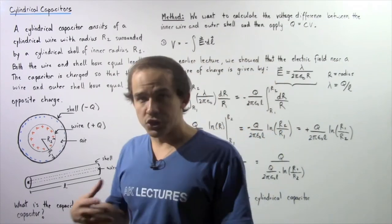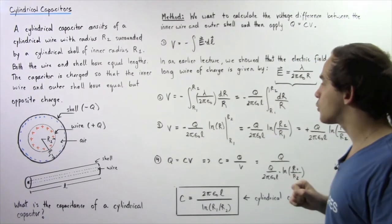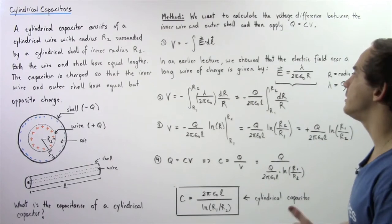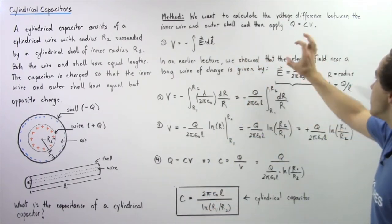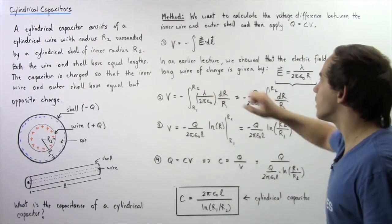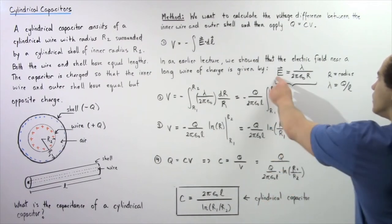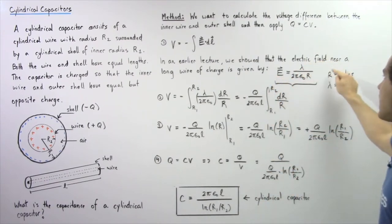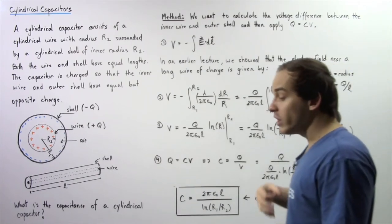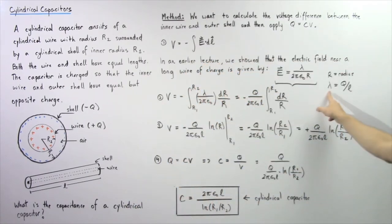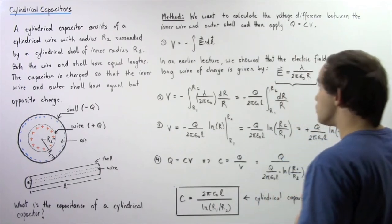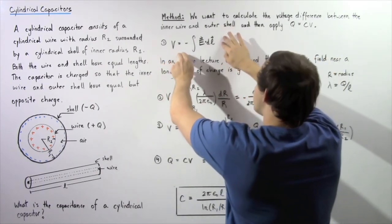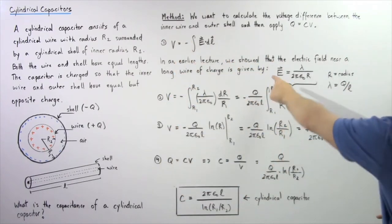We apply this equation, which we derived in a previous lecture: the voltage difference V is equal to the negative of the integral of the dot product of the electric field and our infinitely small distance dl. In an earlier lecture, we used Gauss's law to show that the electric field near a very long solid wire of charge is given by: E equals lambda divided by 2 pi epsilon naught multiplied by R, where lambda is the charge per unit length — given by Q divided by L — and R is the radius from the axis.